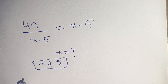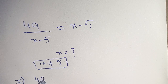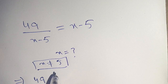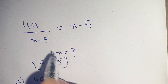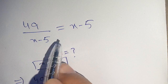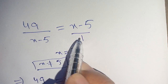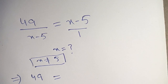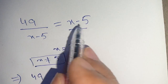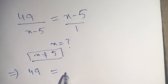Now on the next step we have to solve this. 49 is equal to — we have to cross multiply it — so 49 times 1 becomes 49 is equal to x minus 5 times x minus 5.